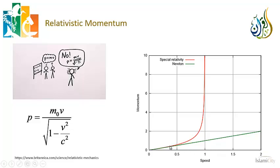In Newton's world, as speed increases, momentum simply increases linearly, and there was no limit to velocity. But let's look at what happens when v approaches c. The fraction v²/c² gets very close to 1, so we're dividing by 1 minus almost 1 — a very, very small number. The momentum rises drastically. In fact, if v were to equal c, we'd be dividing by zero, giving us infinity.